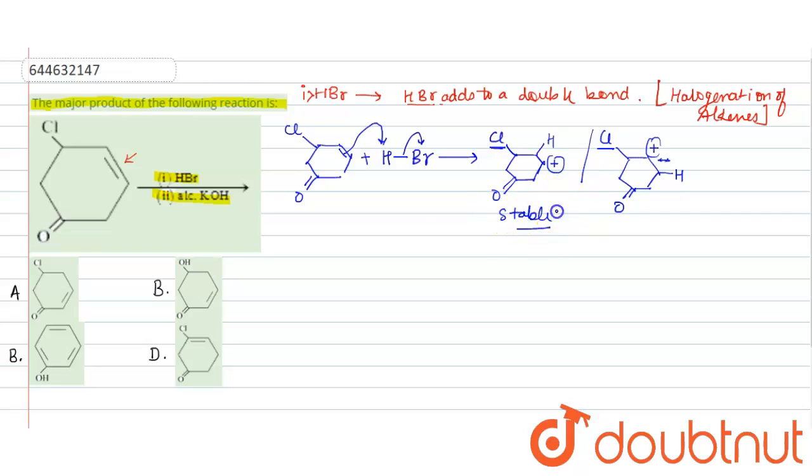Now the next reaction would be addition of Br minus. Br minus, how it would be added? These pair of electrons would be given at this point. So the final product formed would be double bond O and bromine and this part.